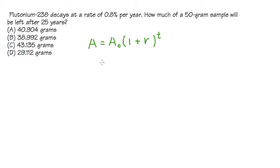So the A is what we're looking for, the amount after 25 years. The A₀, this is the initial amount, so that's the 50 grams. So let me put down the 50 right here.